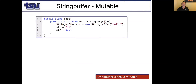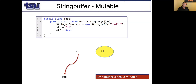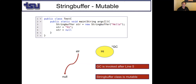StringBuffer is another class similar to String, but it is mutable. When I have str pointing to a memory space containing 'hello' and say str = 'hi', since StringBuffer is mutable it will change the original memory space — the garbage collector will not mark anything for collection at that point. Only when I say str = null will this memory space be marked for garbage collection. So garbage collection is marked right after line 5.